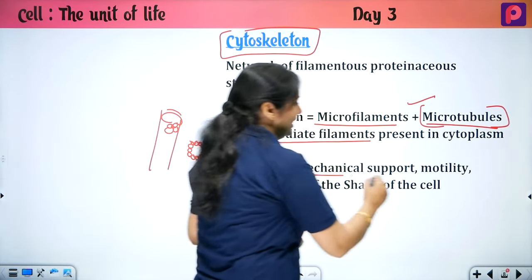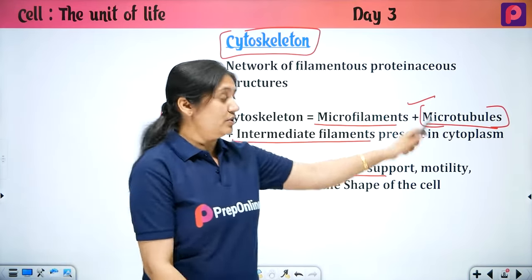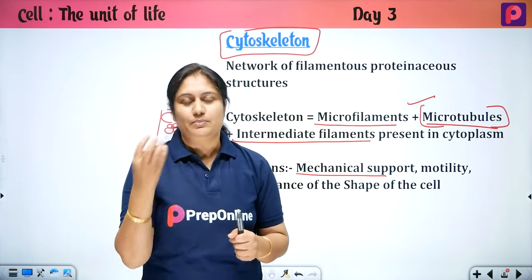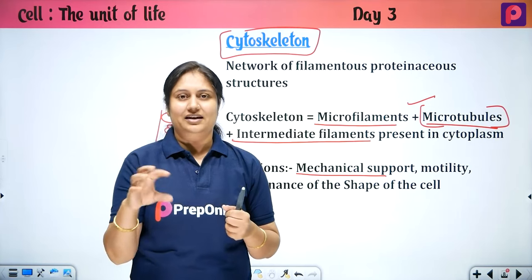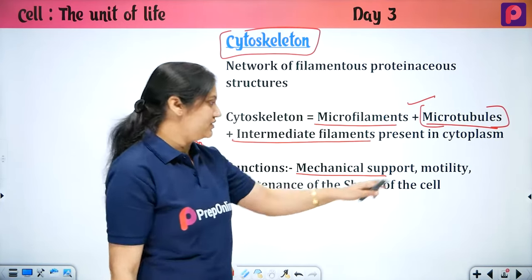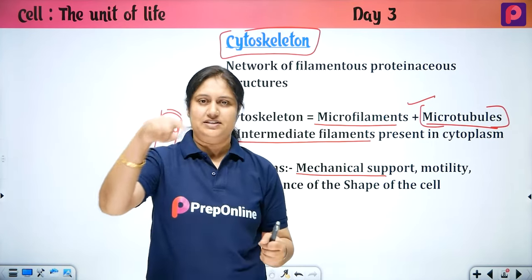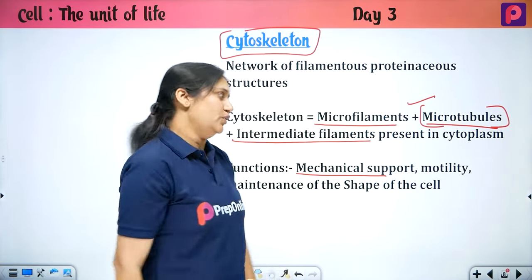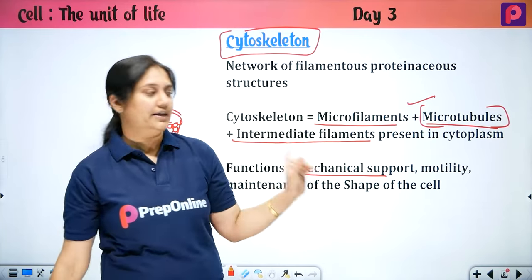The function of cytoskeleton is mechanical support and maintaining organelle motility. Centrioles — formed by microtubules — help form cilia and flagella basal bodies, giving cells motility. The cytoskeleton also supports the cell membrane from beneath. Please remember the cytoskeleton components from NCERT.